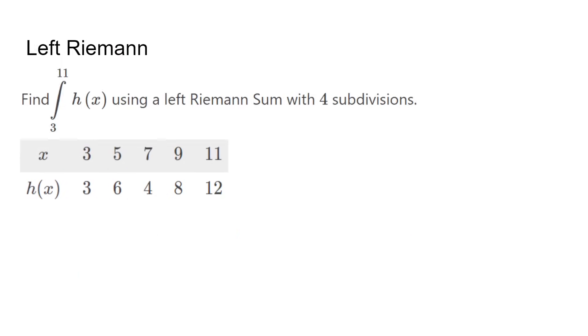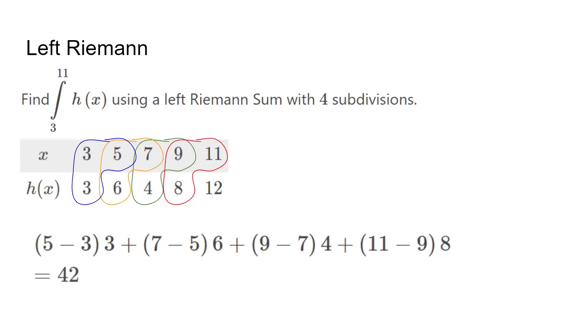For left Riemanns, we do a similar procedure, but we make sure to target the left side y values instead. We still subtract the two x values and multiply by the y value to get our sum.